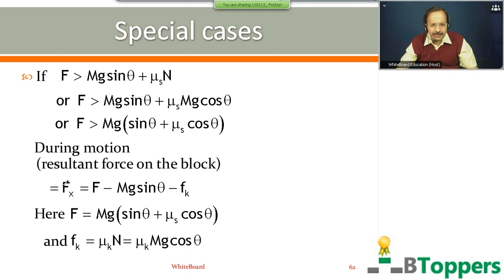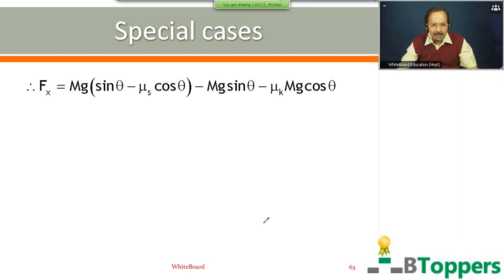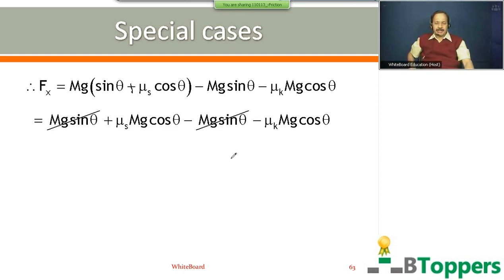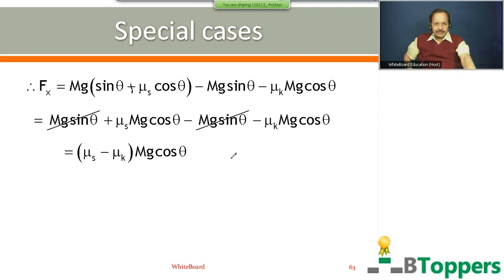Substituting F equal to mg(sin θ + νs cos θ) and fk equal to νk times mg cos θ on the right side: Fx equals mg sin θ plus νs mg cos θ minus mg sin θ minus νk times mg cos θ. Cancelling mg sin θ, you get Fx equal to (νs minus νk) times mg cos θ.